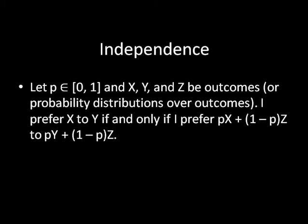So what is independence? Well, there's the definition there — it's pretty dense. So let's take each of these things one step at a time. Start out by letting some number P be between zero and one. It could be any number between zero and one, and X, Y, and Z be outcomes. You'll notice in parentheses that it could actually be a probability distribution over an outcome, but let's ignore that for now and cover that part at the end. The rule for independence is that I prefer X to Y if and only if I prefer the convex combination of outcomes X and Z — a lottery where you get X with probability P and Z with probability one minus P. You prefer X to Y if and only if you prefer that first lottery to the second lottery where you get Y with probability P and Z with probability one minus P.